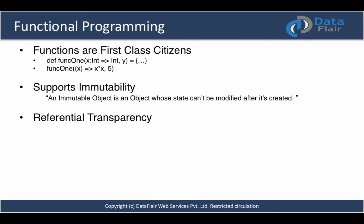Let's understand this with a simple example. Suppose you have this function: `def addUsTogether` — that's Scala's way of writing a function. We use the `def` keyword to define a function, then the function name, argument list, and return type. In our case, we take two arguments, `a` and `b`, which are of integer type, and it returns an integer. This function performs an add operation and returns the result. If you look closely, this function does not affect any other parts of your program — and it supports this major concept called referential transparency.